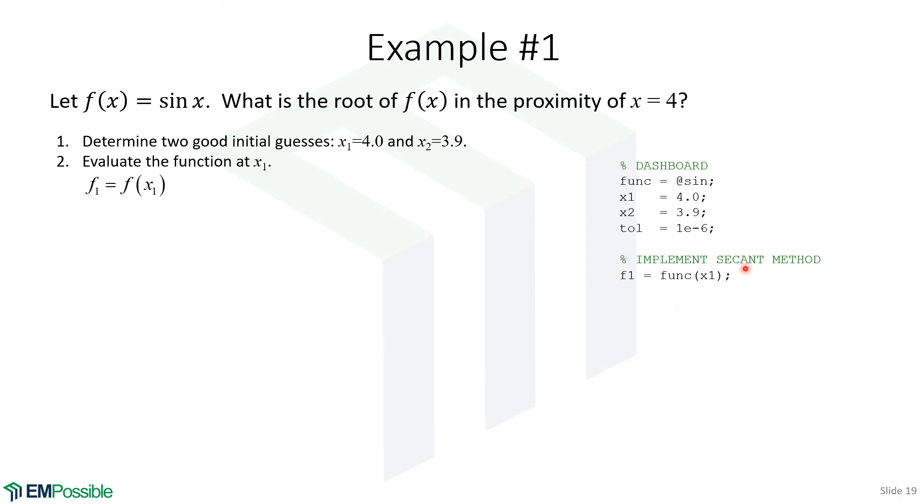So the first thing we'll do is evaluate the function at the first point. And so that's what happens here. We're calling func, which in this case acts just like the sine. And so we're calculating sine of x1 to get f1.